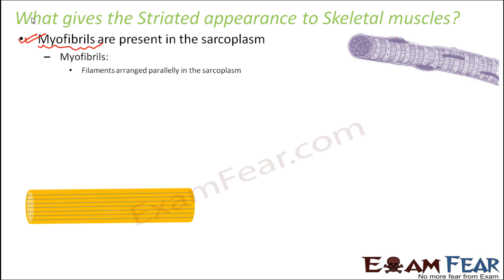The striated appearance on the muscle fibers is because of the presence of these thin filaments. These filaments have alternate dark and light bands. When many such filaments are joined together, somewhere you have dark bands, somewhere you have light bands, and overall you get an alternate light and dark appearance — that is what is known as striations.